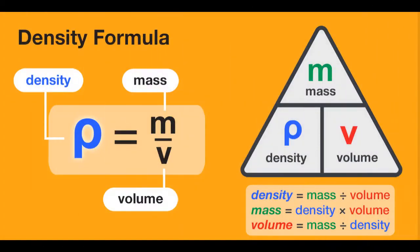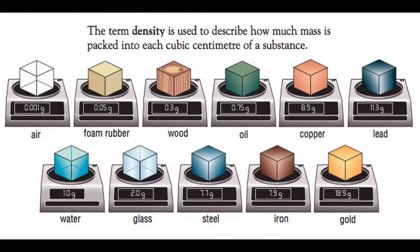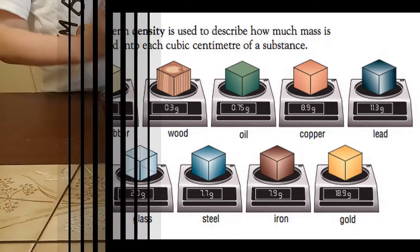That is true. But density specifically is the mass of an object or a substance divided by its volume. So we have to take the exact same amount of different substances and then see which one is the heaviest — that one has the highest density.